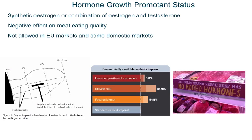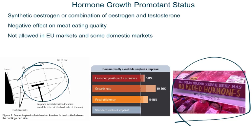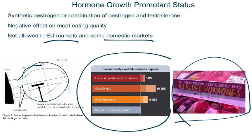Hormone growth promoters (HGPs) are implants placed inside the animal's ear that increase carcass composition, growth rate, and feed conversion efficiency. They are either oestrogen, or oestrogen and testosterone, depending on the sex of the cattle. HGPs have a negative effect on meat-eating quality. Some markets — such as Coles no-added-hormones beef and the EU — prohibit their use. However, they do offer efficiencies in feedlotting: increasing muscle, growth rate, and growth per unit of feed.